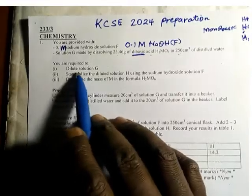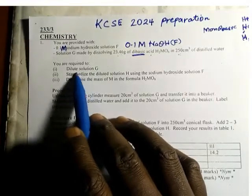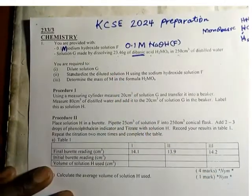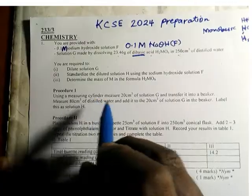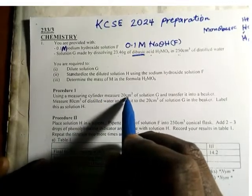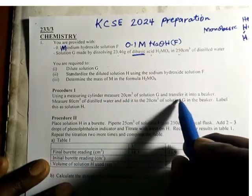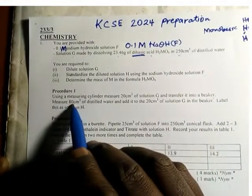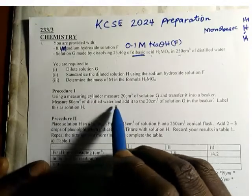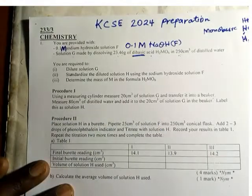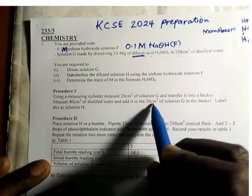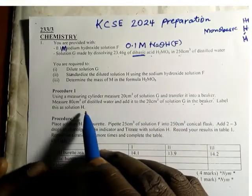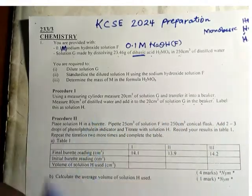You are required to dilute and standardize solution G. Procedure one: using a measuring cylinder, measure 20 cm³ of solution G and transfer it into a beaker. Then measure 80 cm³ of distilled water and add it to the 20 cm³ of solution G in the beaker. Label the resulting solution H.